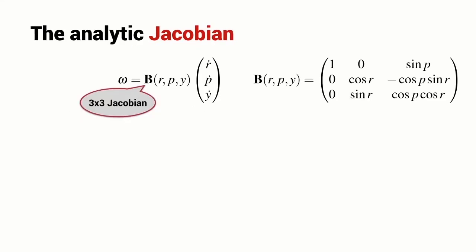The result is a relationship between angular velocity ω and the rates of change in my roll, pitch, and yaw angles, and this relationship is in terms of yet another Jacobian matrix. It's a 3×3 Jacobian matrix and I'm going to denote it by the symbol capital B.